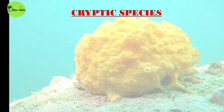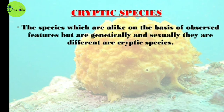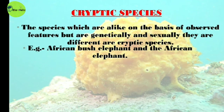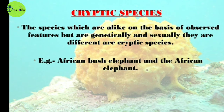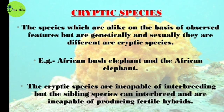Cryptic species are those which appear alike based on observed features but are genetically and sexually different. Examples include the African bush elephant and the African forest elephant. The difference between cryptic and sibling species is that cryptic species are incapable of interbreeding, whereas sibling species can interbreed but are incapable of producing viable hybrids.